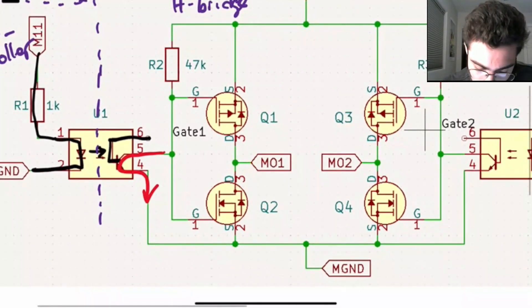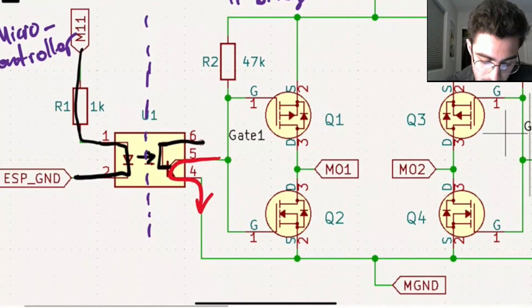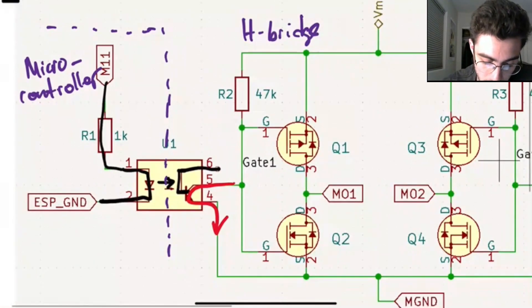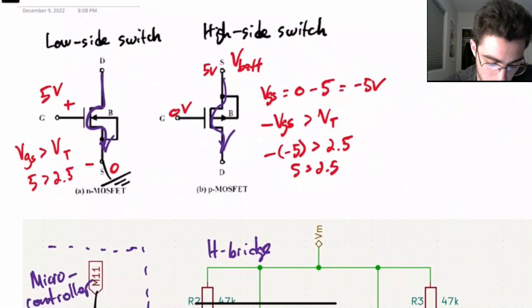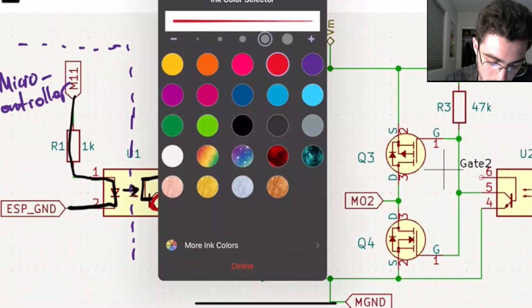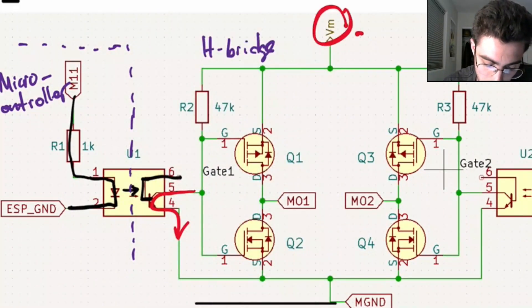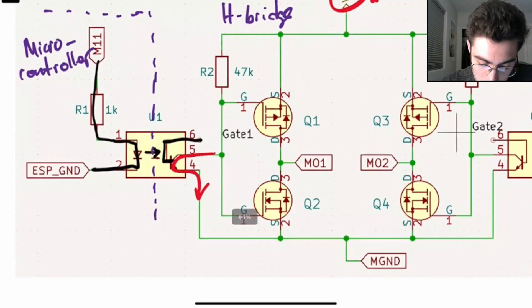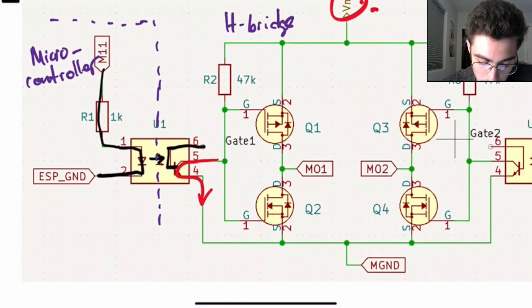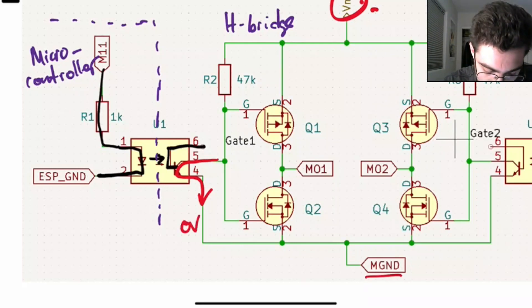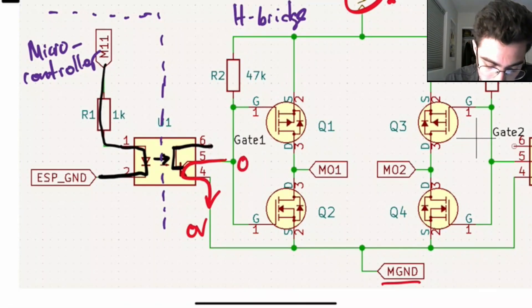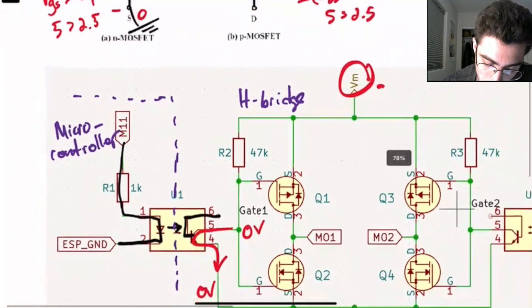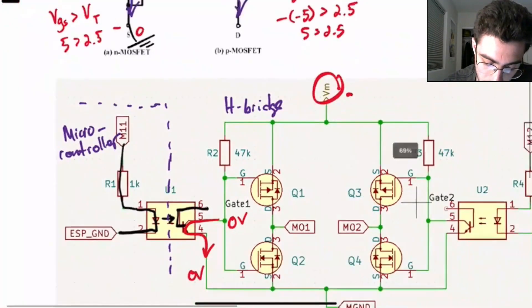So now the way the MOSFETs actually turn on here is, like I mentioned before, with the basic theory of operation of the transistor, if you have your power source up here, which we've called V-motor, and let's say you turn on pin M01 of your microcontroller. So we know that this will allow pins 5 and 4 of the opto-isolator to conduct. So if you have your ground down here and you have 0 volts on pin 4, then you will have 0 volts on pin 5.